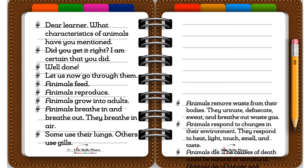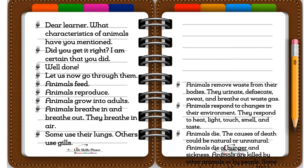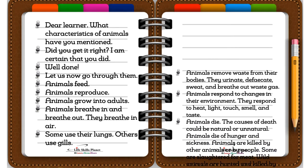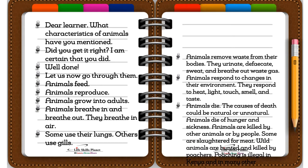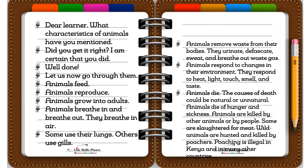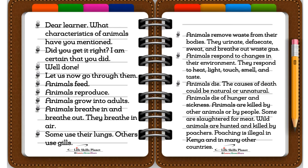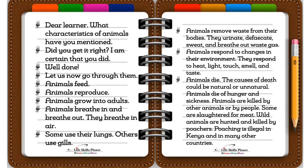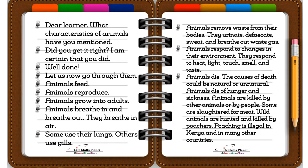Animals die. The causes of death could be natural or unnatural. Animals die of hunger and sickness. Animals are killed by other animals or by people. Some are slaughtered for meat. Wild animals are hunted and killed by poachers. Poaching is illegal in Kenya and in many other countries.